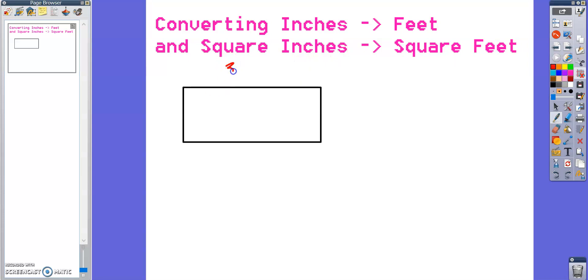So let's say we have a rectangle here that's 36 inches long and 24 inches high. Now we know from ratio reasoning that one foot is equivalent to 12 inches.